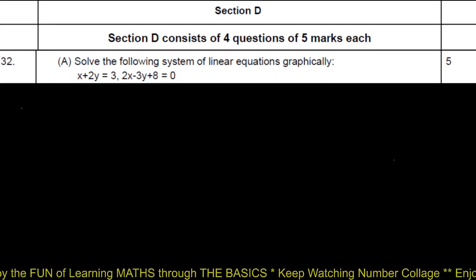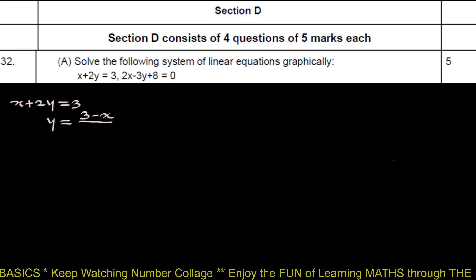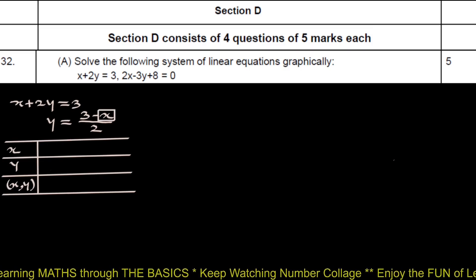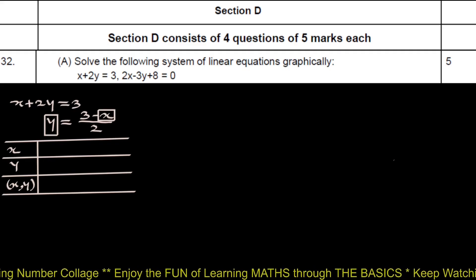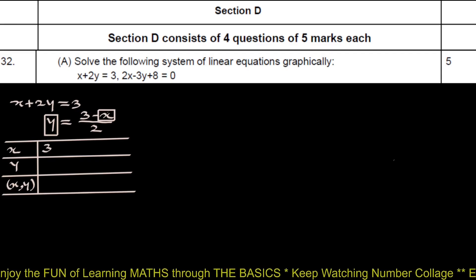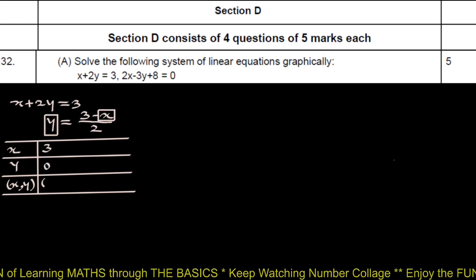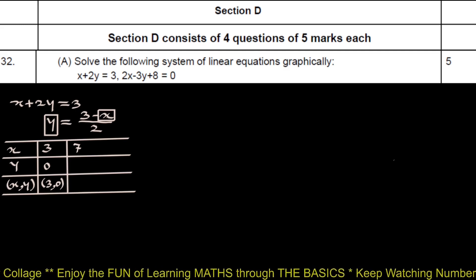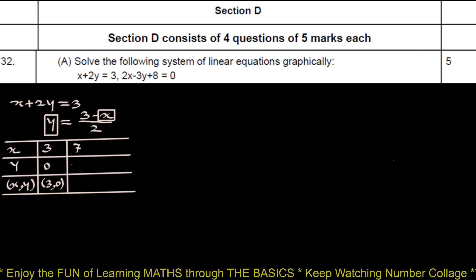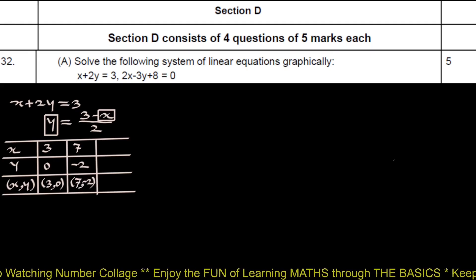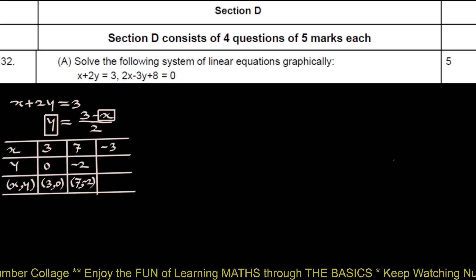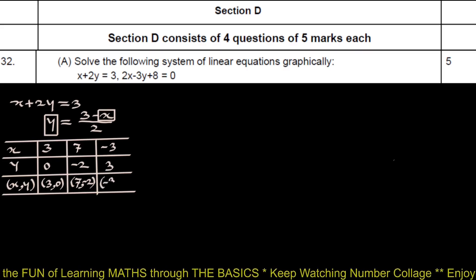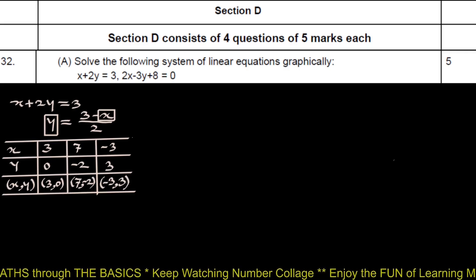We write the first linear equation as y equals (3 minus x) upon 2 and prepare a table. We choose values of x such that y is an integer. If x equals 3, then (3 minus 3)/2 = 0, giving point (3, 0). If x equals 7, then (3 minus 7)/2 = -2, giving point (7, -2). If x equals -3, then (3 + 3)/2 = 3, giving point (-3, 3). Three points are sufficient to draw the graph.